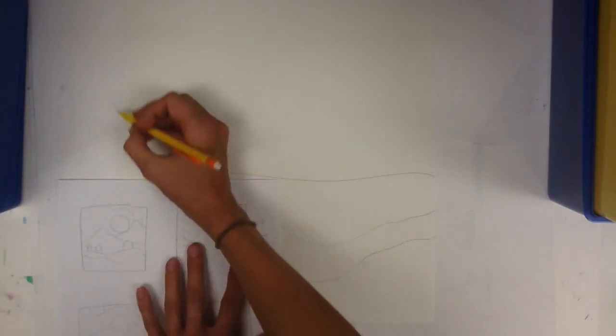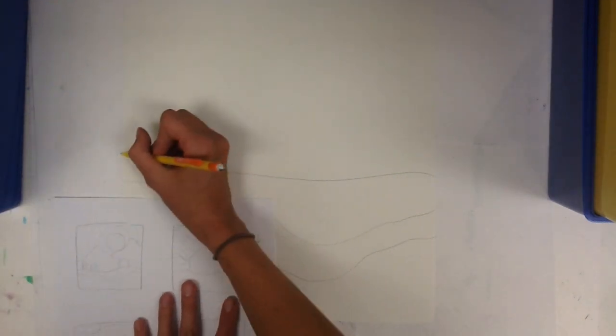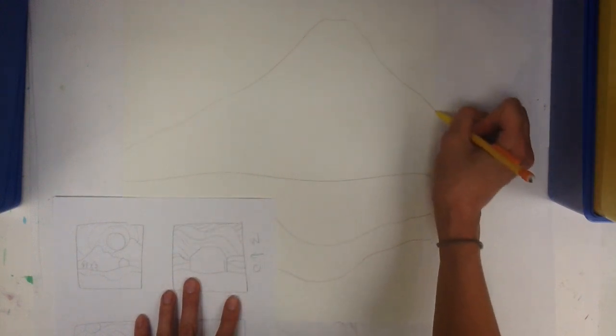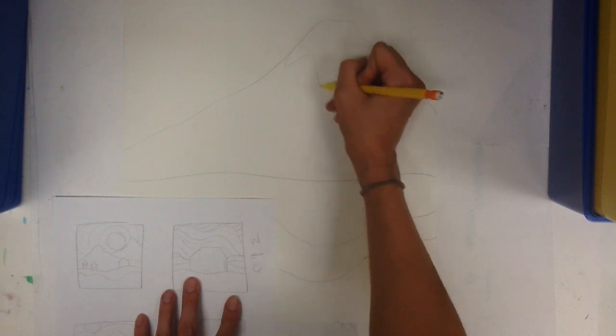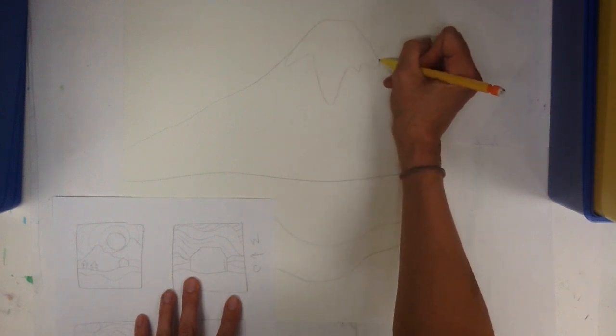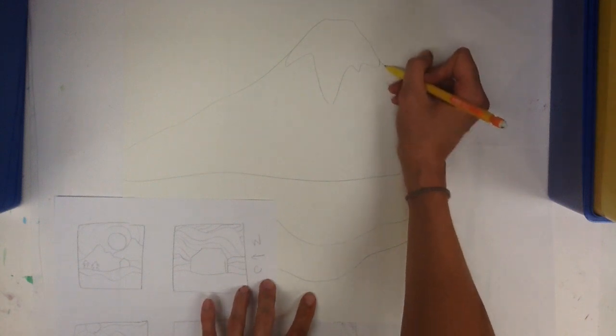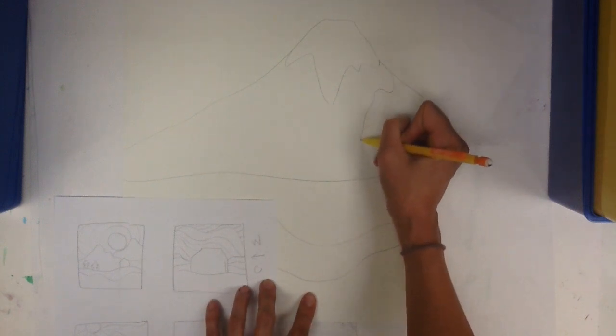And then I'm going to have a mountain. So it's going to start way over here and come up. And down. I'm going to add where it would have ice. And I'm going to add a couple of lines through my mountain. I think I'm going to follow the pattern of the ice.